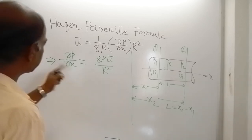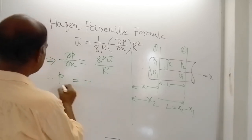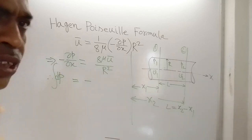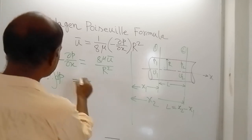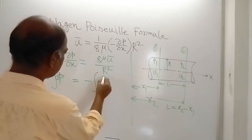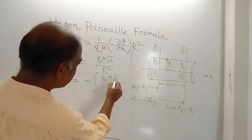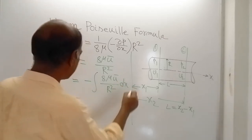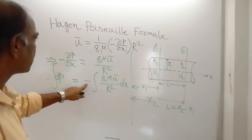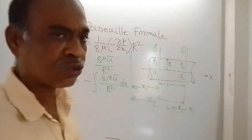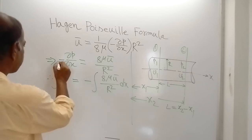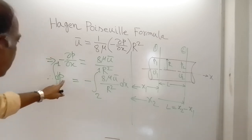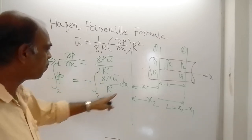Therefore, dP can be written as minus 8μU_bar divided by R², multiplied by dX. We integrate from section 2 to section 1. Here, 1 and 2 are denoting section numbers, not numerical values of pressure or X. R, μ, and U_bar — the average velocity — are all constants.